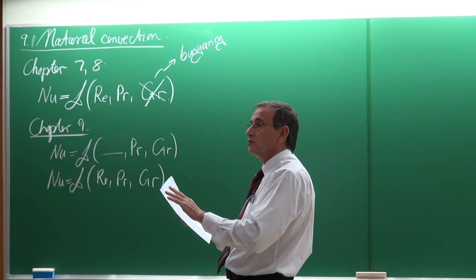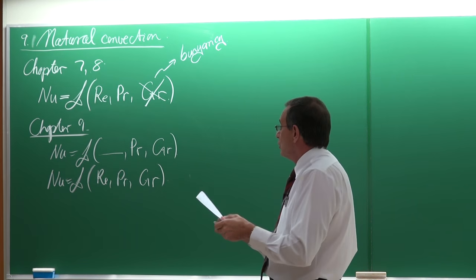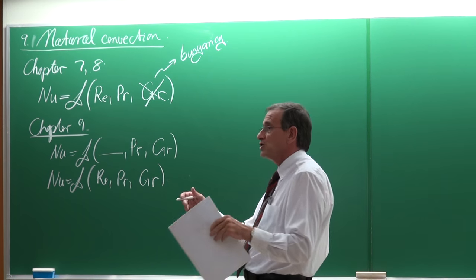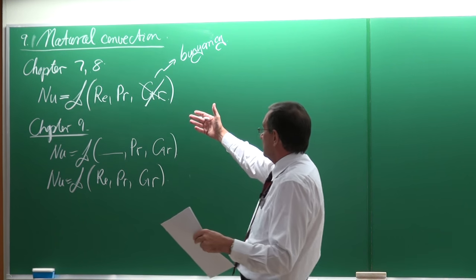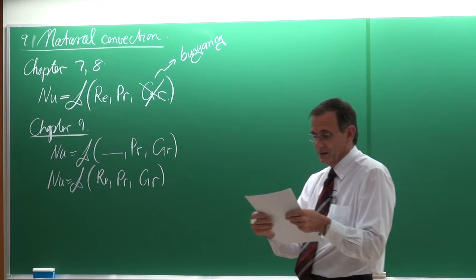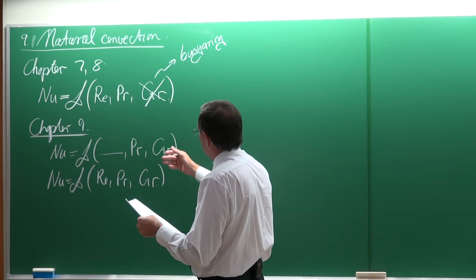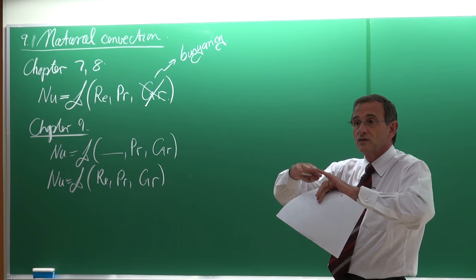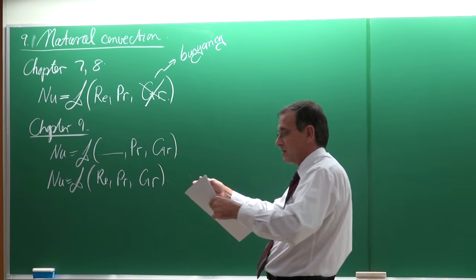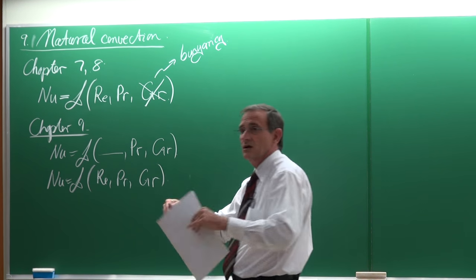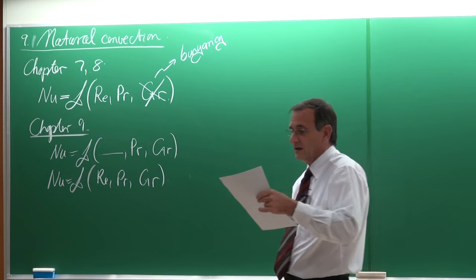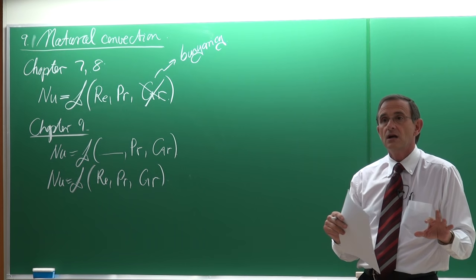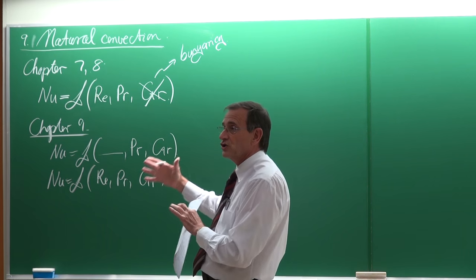Looking at the content of chapter nine: first we'll look at the physical mechanism of natural convection in paragraph 9.1, then the equation of motion and the Grashoff number in 9.2. Then we'll look at different surfaces — specifically flat surfaces to start simple — followed by fin surfaces in paragraph 9.4, enclosures in paragraph 9.5, and finally paragraph 9.6, which covers problems combining forced and natural convection.